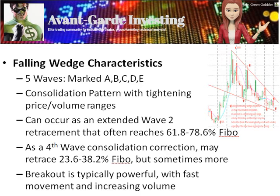The falling wedge is typically a bullish reversal or continuation set-up pattern, with five waves marked A, B, C, D, and E.